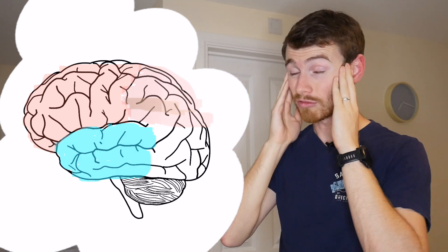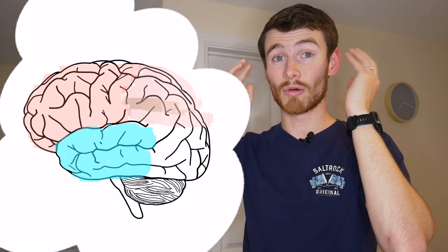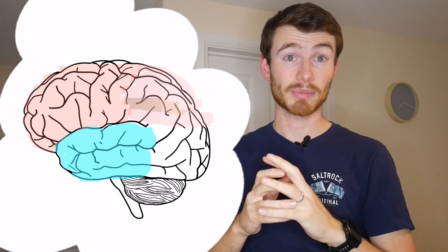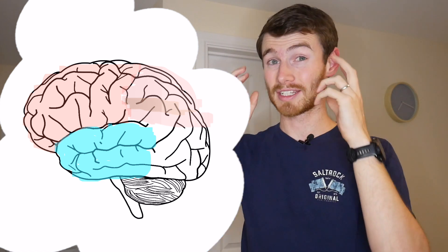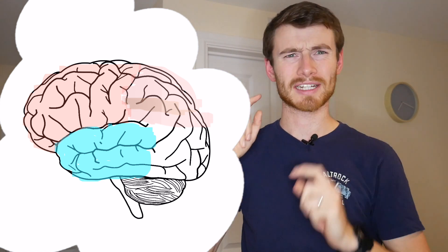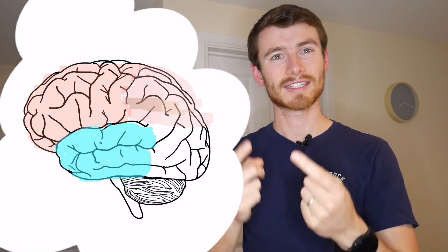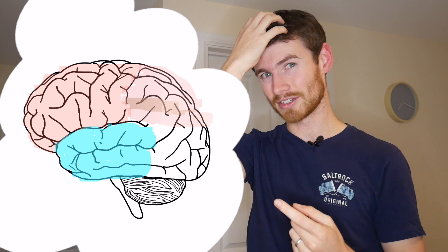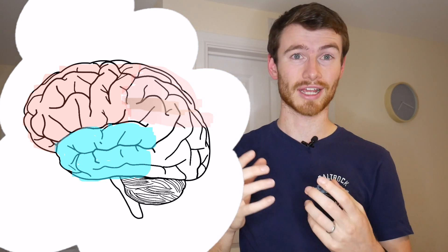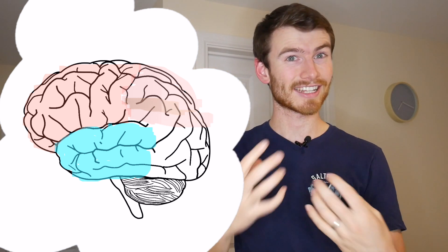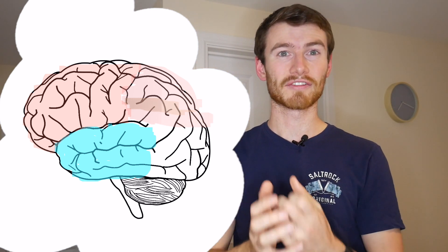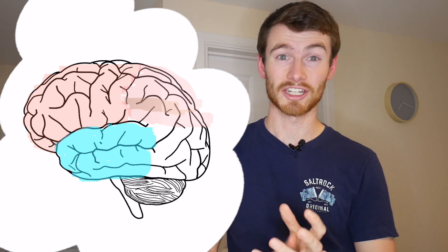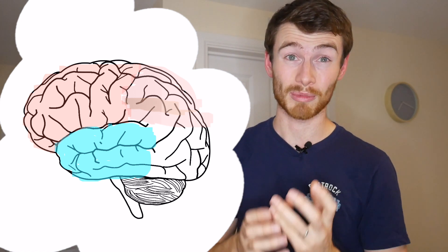The temporal lobe is all about auditory processing and hearing. Understanding speech comes in there, whereas actually saying things and language goes into your frontal cortex. So speaking, listening, and understanding conversation actually takes a lot of energy to do properly.